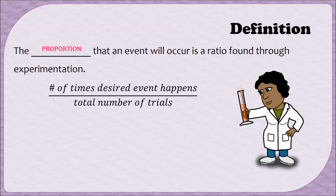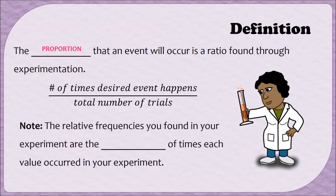To relate back to our experiment, the relative frequencies that you found are the proportion of times that each value occurred in your experiment. For example, when I conducted my own experiment, I rolled a four a total of eight times. Eight out of 30 would be about 0.267, so the proportion of times that I rolled a four was about 0.267. When you think about a proportion, you could just think of that as a relative frequency.